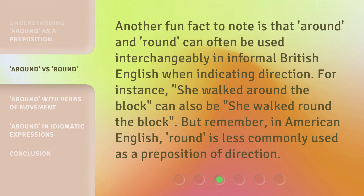Another fun fact to note is that 'around' and 'round' can often be used interchangeably in informal British English when indicating direction. For instance, 'she walked around the block' can also be 'she walked round the block.' But remember, in American English, 'round' is less commonly used as a preposition of direction.